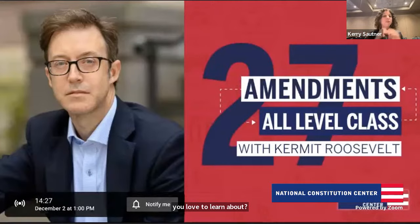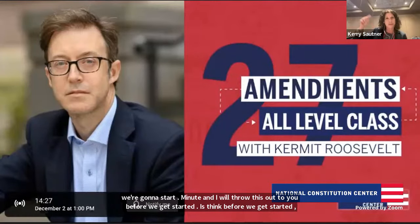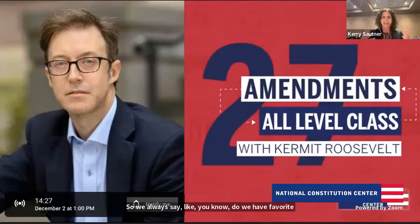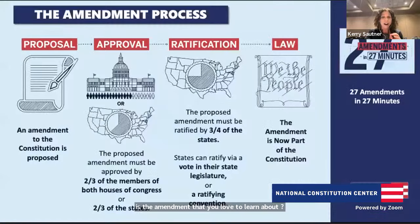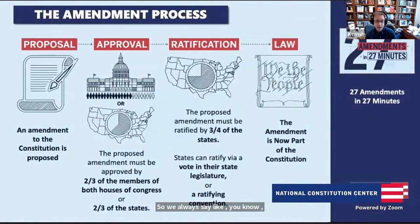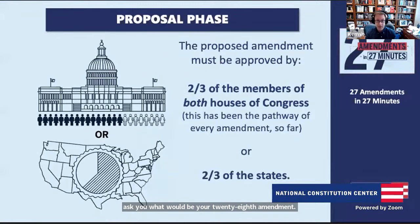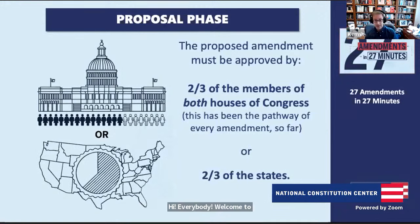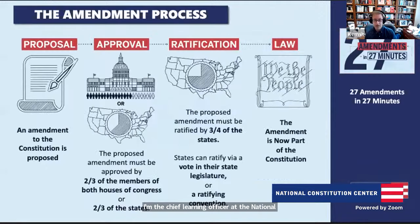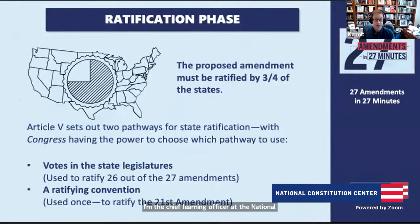I want to talk about all 27 amendments, and also the potential 28th amendment our students may want to propose. But before we can talk about those amendments, we have to take a beat on how do you actually amend the Constitution. There are two different ways an amendment can be proposed: one is from Congress — two thirds of each house — or two thirds of state legislatures can call for it. Then ratification requires three quarters of states, either through their legislatures or a ratifying convention.